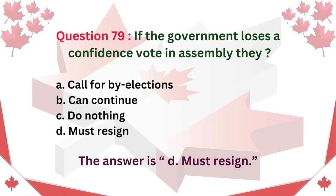Question 79. If the government loses a confidence vote in assembly, they: A. Call for by-elections B. Can continue C. Do nothing D. Must resign. The answer is D. Must resign.